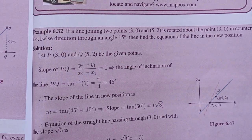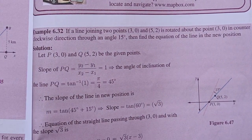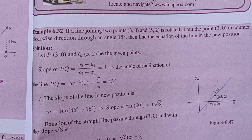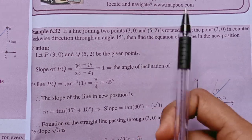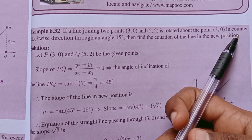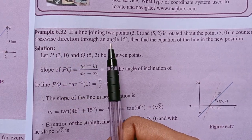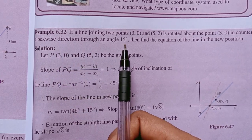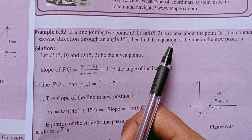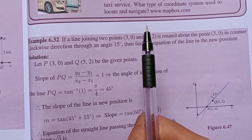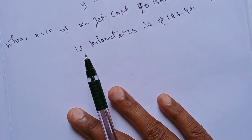Hi students, I am Vino. Levant Bank Chapter 6, Example 6.32. The question is: if a line joining (3,0) and (5,2) is rotated about the point (3,0) in the counter-clockwise direction through an angle of 15 degrees, then find the equation of the line in the new position.